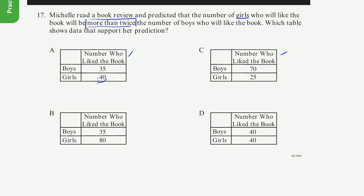So let's see, the girls here is 40, the boys here are 35. There are more girls than boys, but it's not more than twice the boys. The boys are 35, twice the boys would be 70, and girls is definitely not more than 70. So that's not our answer.